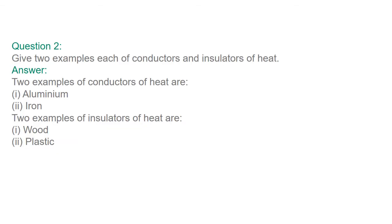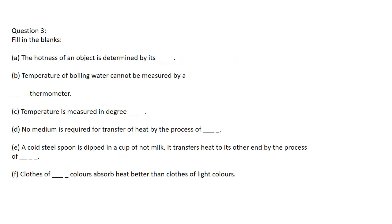Question number two: give two examples of conductors and insulators of heat. Conductors are substances that allow heat to flow through them — examples are aluminum and iron. Insulators do not allow heat to flow through them — examples are wood and plastic.